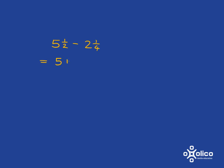So this is 5 plus 1/2, and this is 2 plus 1/4, and then we just do the whole numbers 5 minus 2, and we have 1/2 minus 1/4. 5 minus 2 is 3, and 1/2 minus 1/4 is 1/4, so we get 3 and 1/4.